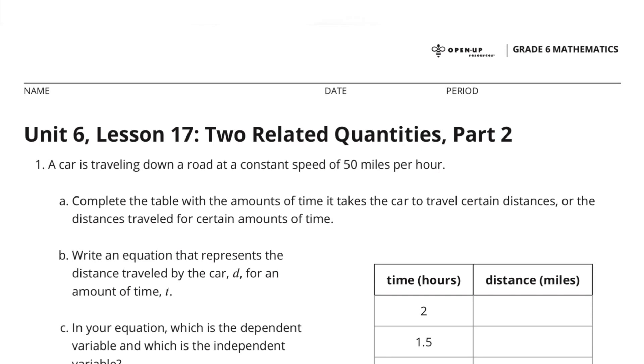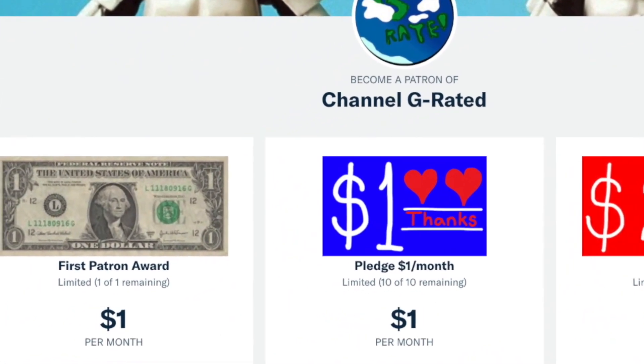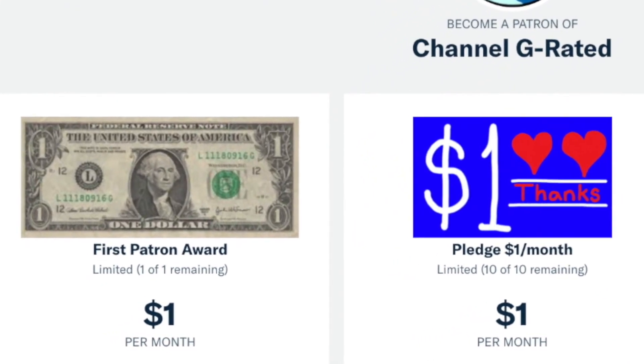Congratulations, you have completed Unit 6, Lesson 17, Two Related Quantities, Part 2. Right now, you can become a patron for as little as $1 a month. That sure beats the price you pay for a tutor. Bye-bye.